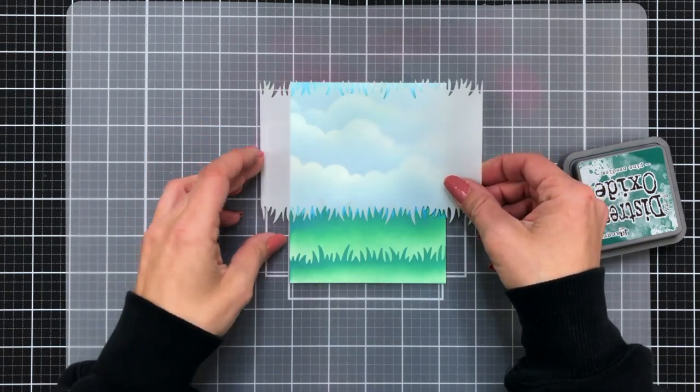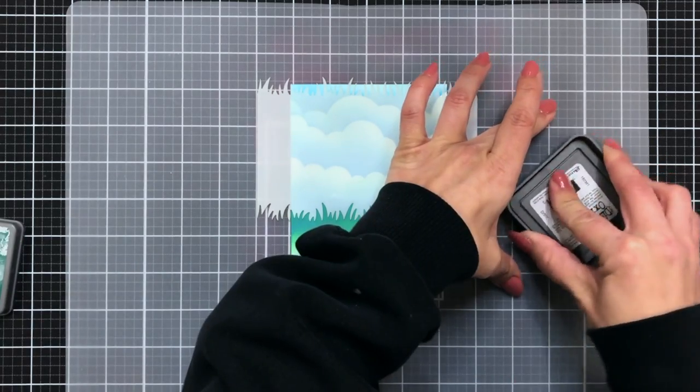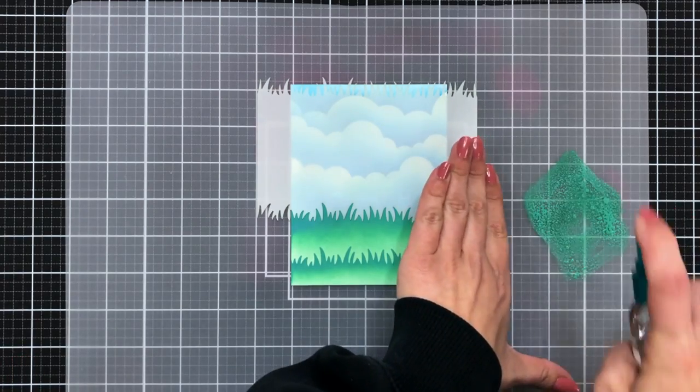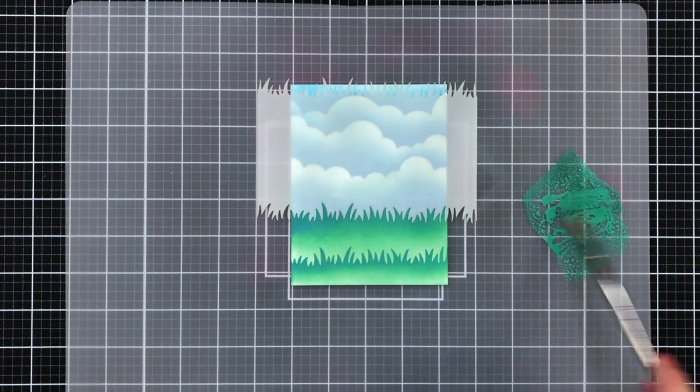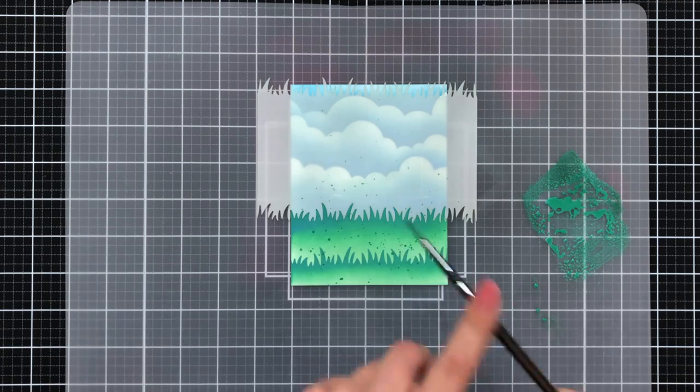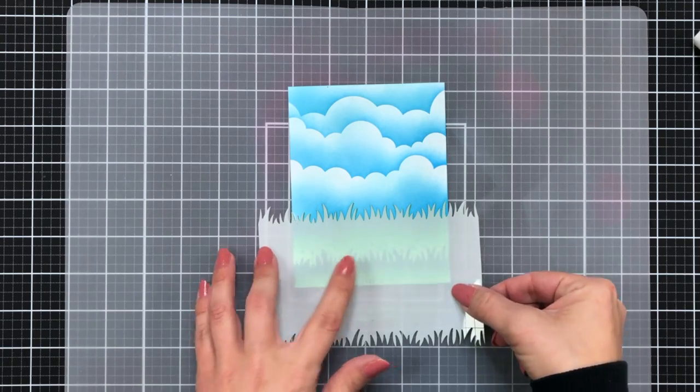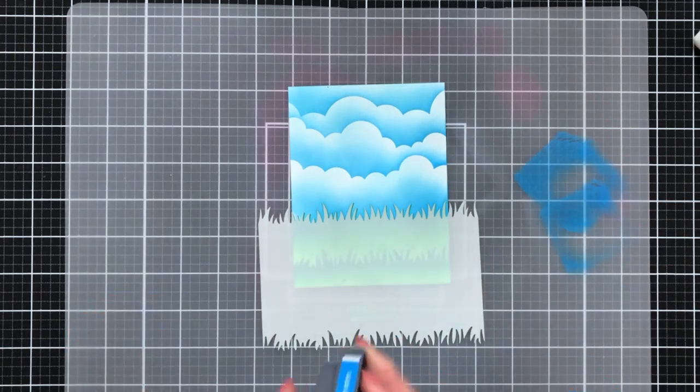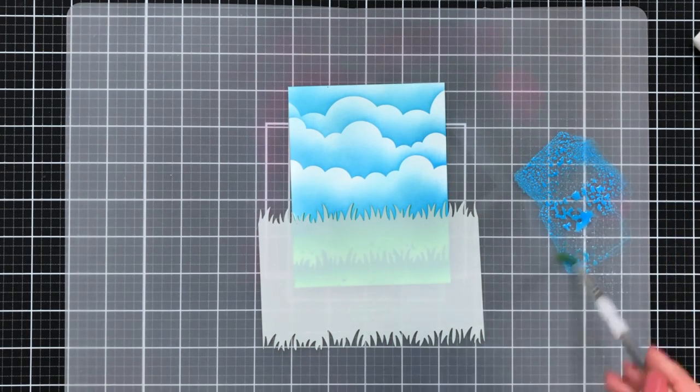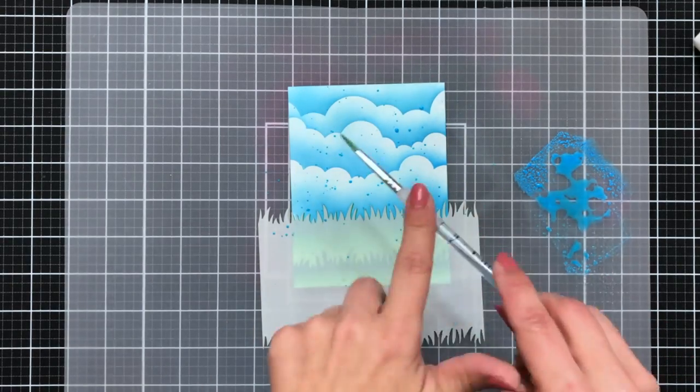One more quick thing that I decided I wanted to do is add just a little bit of interest to my background. So I am placing that grass stencil back on to mask my clouds. I squished it down some of that pine needles distress oxide ink, spritzed some water and I'm just going to flick this onto my grass. You see this a lot of time with sand but I think it looks really cool on the grass and on the sky too. It just kind of breaks it up, doesn't make it so flat looking. And then once those splatters were dry I masked that off with the stencil again, squished it down the salty ocean, spritzed with water and flicked onto my background for the sky too.